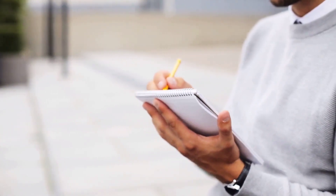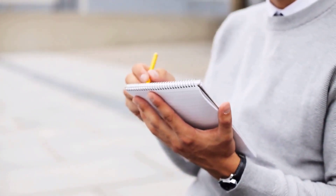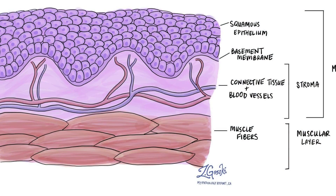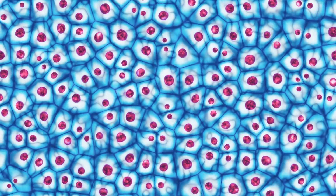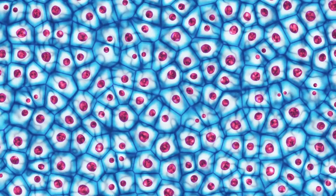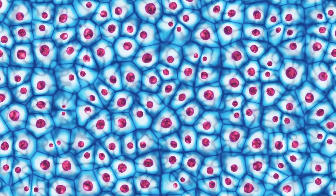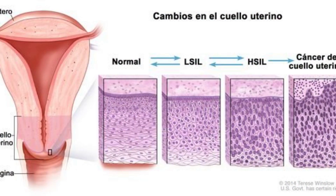What is LSIL? LSIL stands for Low Grade Squamous Intraepithelial Lesions. This term may sound intimidating, but let's break it down together. Squamous epithelium is a type of tissue that covers certain parts of our body, such as the cervix. A lesion in this context refers to a change in cells that could be, but not always, a precursor to cancer. Low Grade indicates that these changes are mild and less likely to progress to cancer than high-grade lesions.